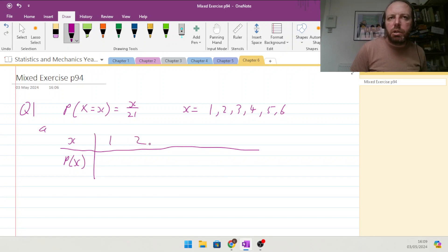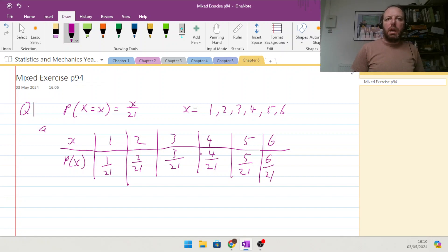1, 2, 3, 4, 5, and 6. That probability is coming down, is going to be 1 twenty-first, 2 twenty-firsts, 3 twenty-firsts, and that is that.